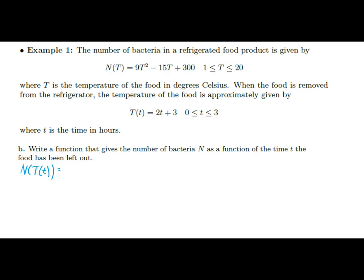So what I can do is say, I have this temperature function. How about I place that temperature function everywhere where I see temperature up here? So I can say 9, but it'll be the temperature function squared minus 15 times the temperature function plus 300. But that temperature function, we know what that is, that's 2t plus 3. So this becomes 9 times (2t plus 3) squared minus 15 times (2t plus 3) plus 300.